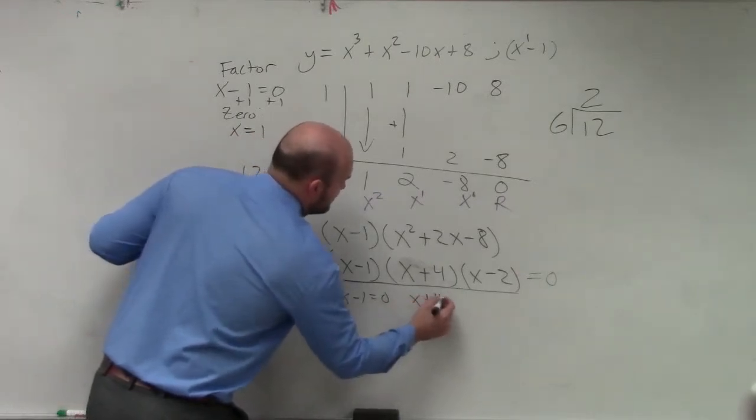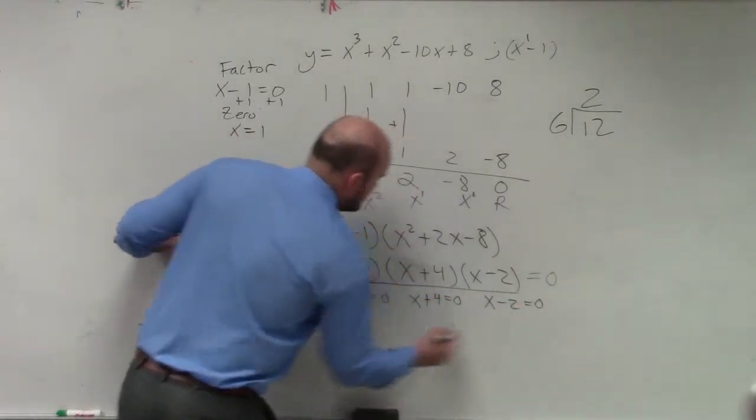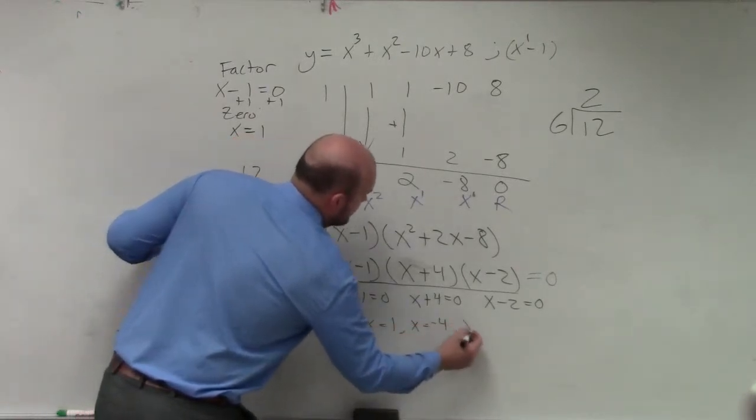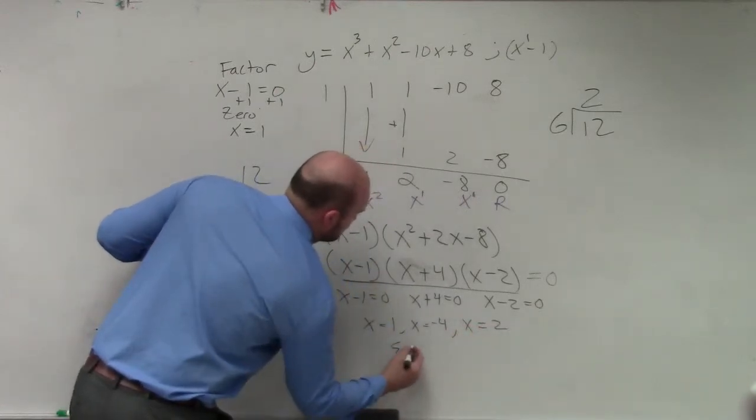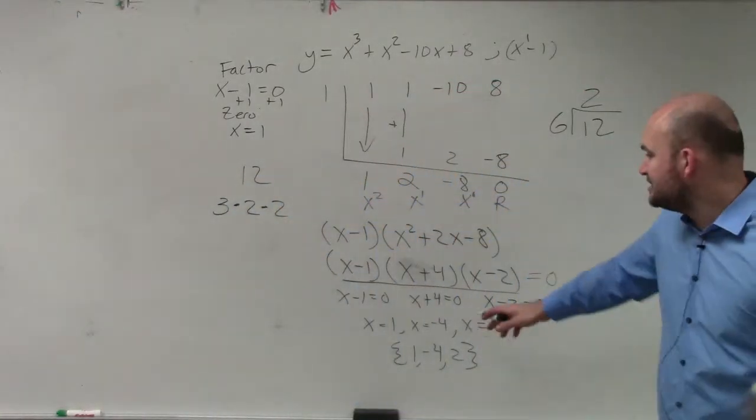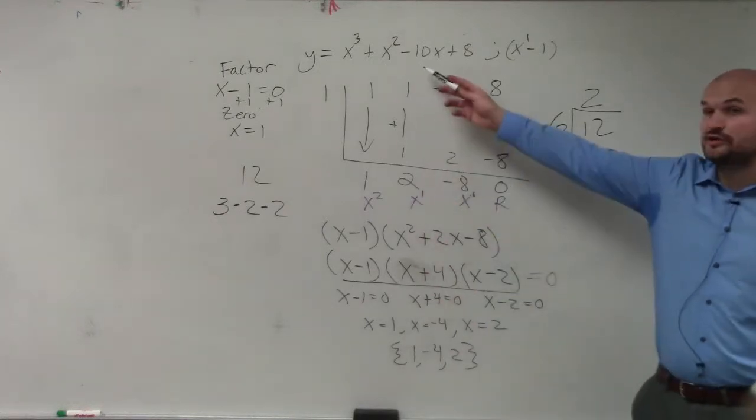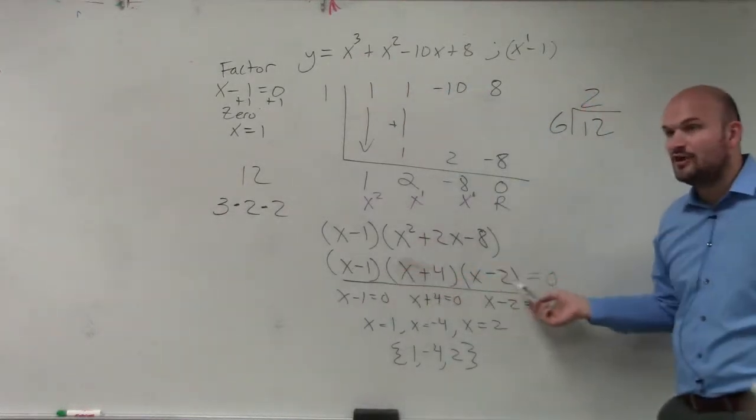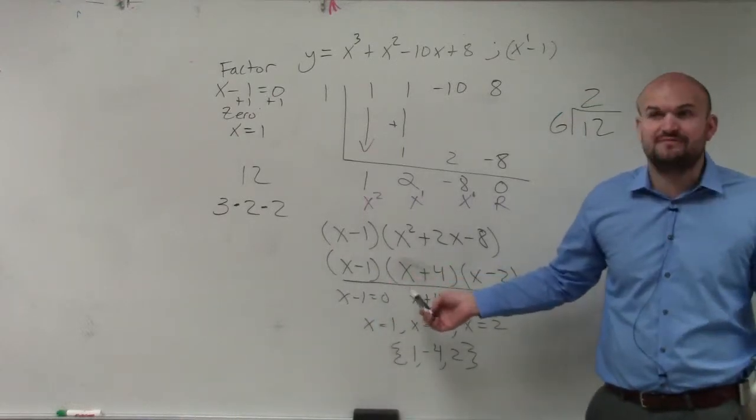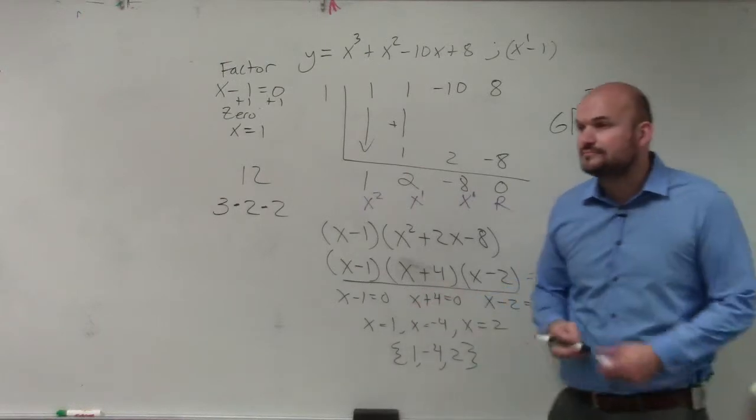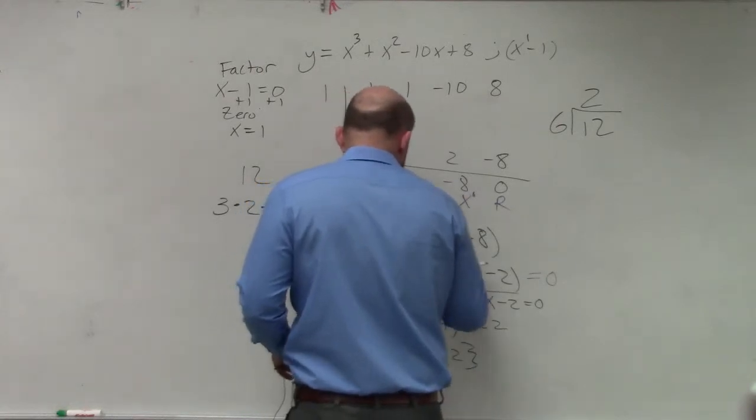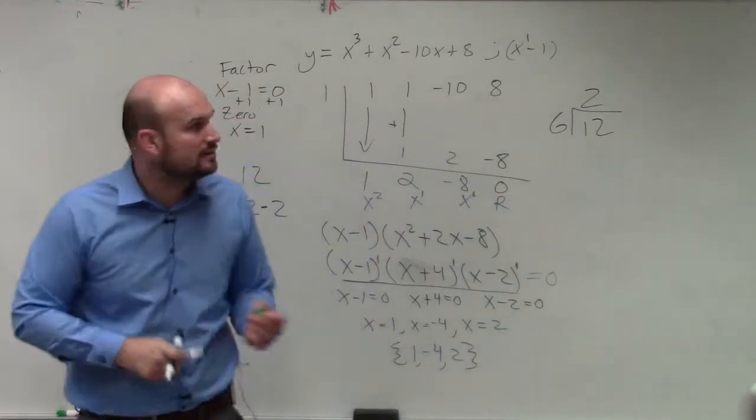So x minus 1 equals 0. This wasn't part of your problem, but I'm trying to go to the next level with you. So therefore, the solution set is x equals 1, x equals negative 4, and x equals 2. And let's double check our answer using the fundamental theorem of algebra. How many solutions do we have? 3. What is the degree? 3. What is the multiplicity of all of my zeros? 1. We have a multiplicity of 1, because the power of each factor is 1. Does everybody see that?